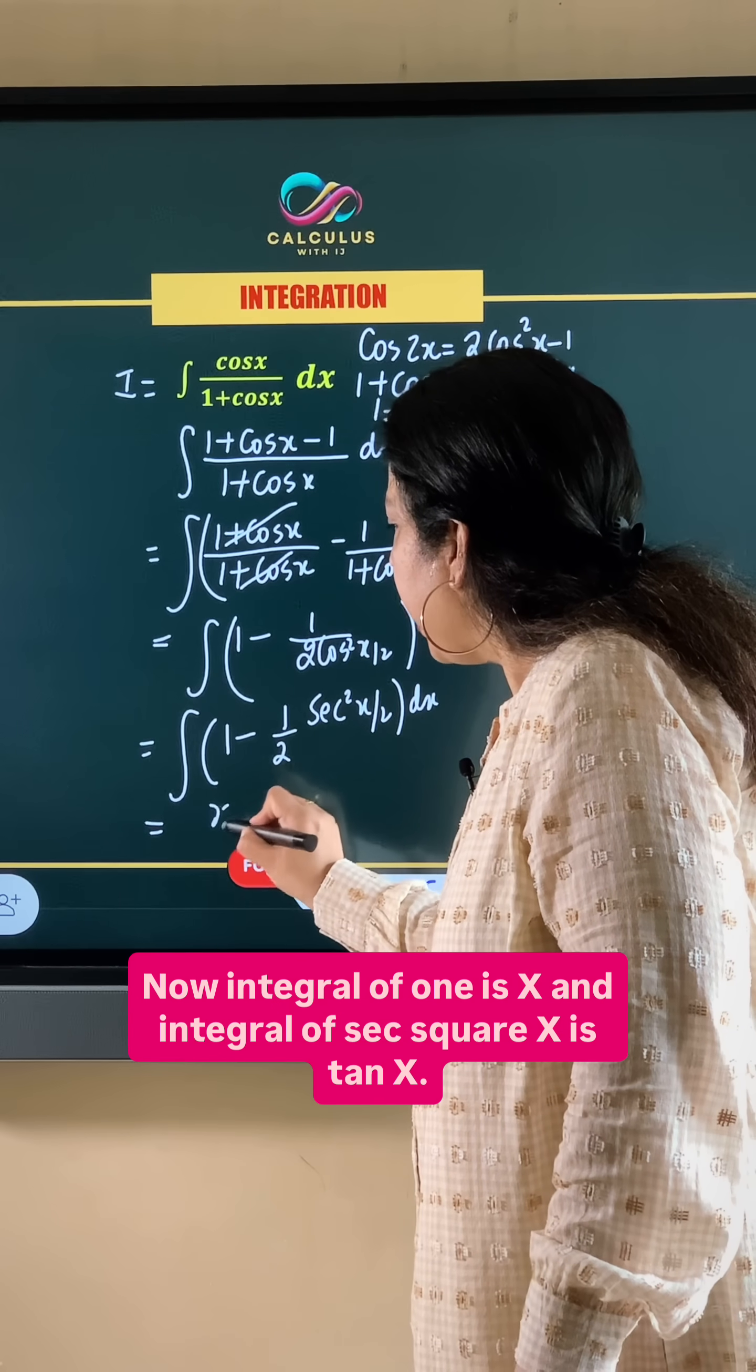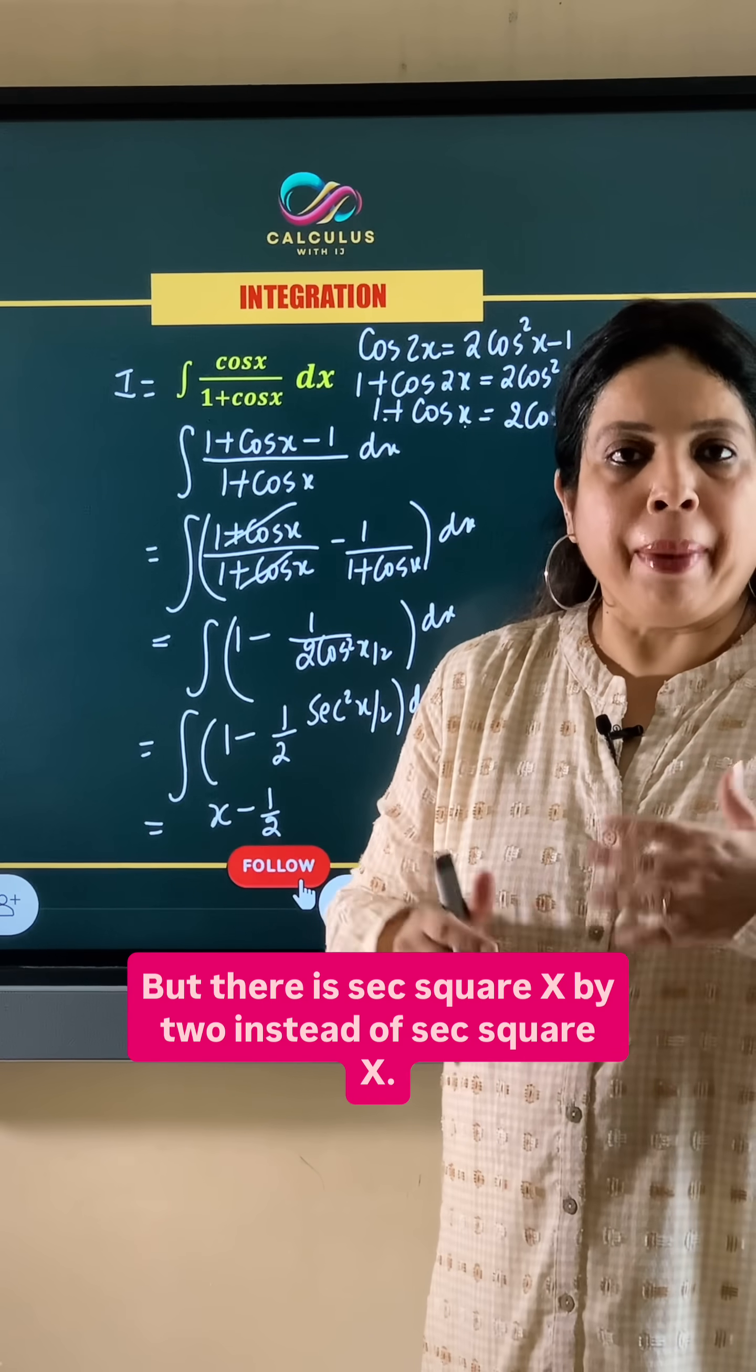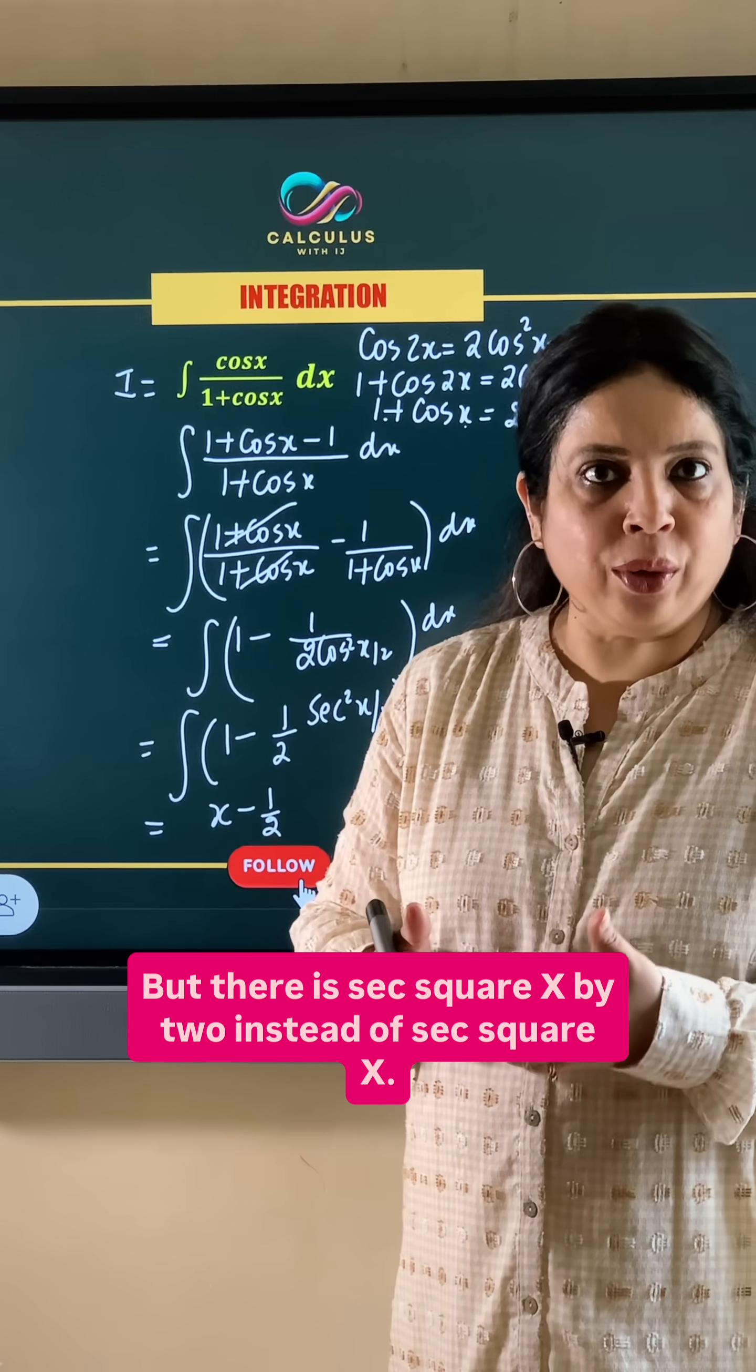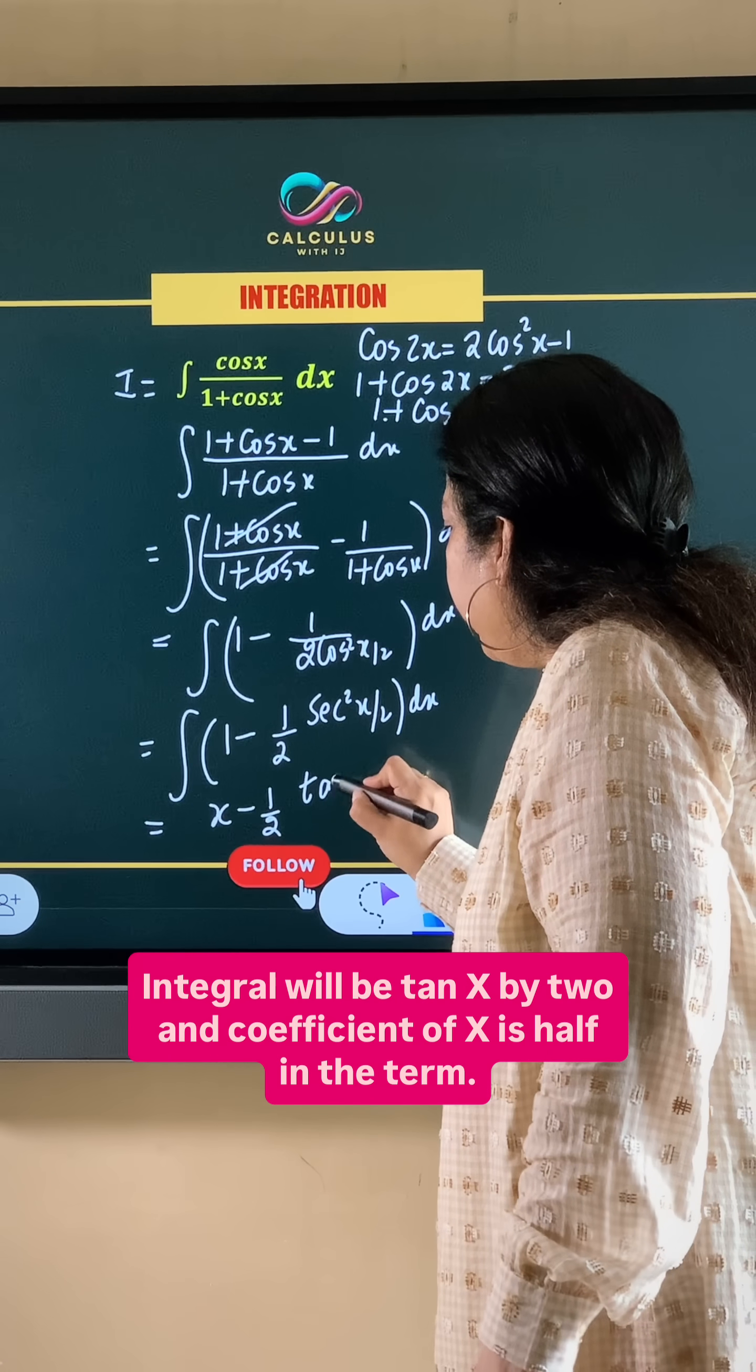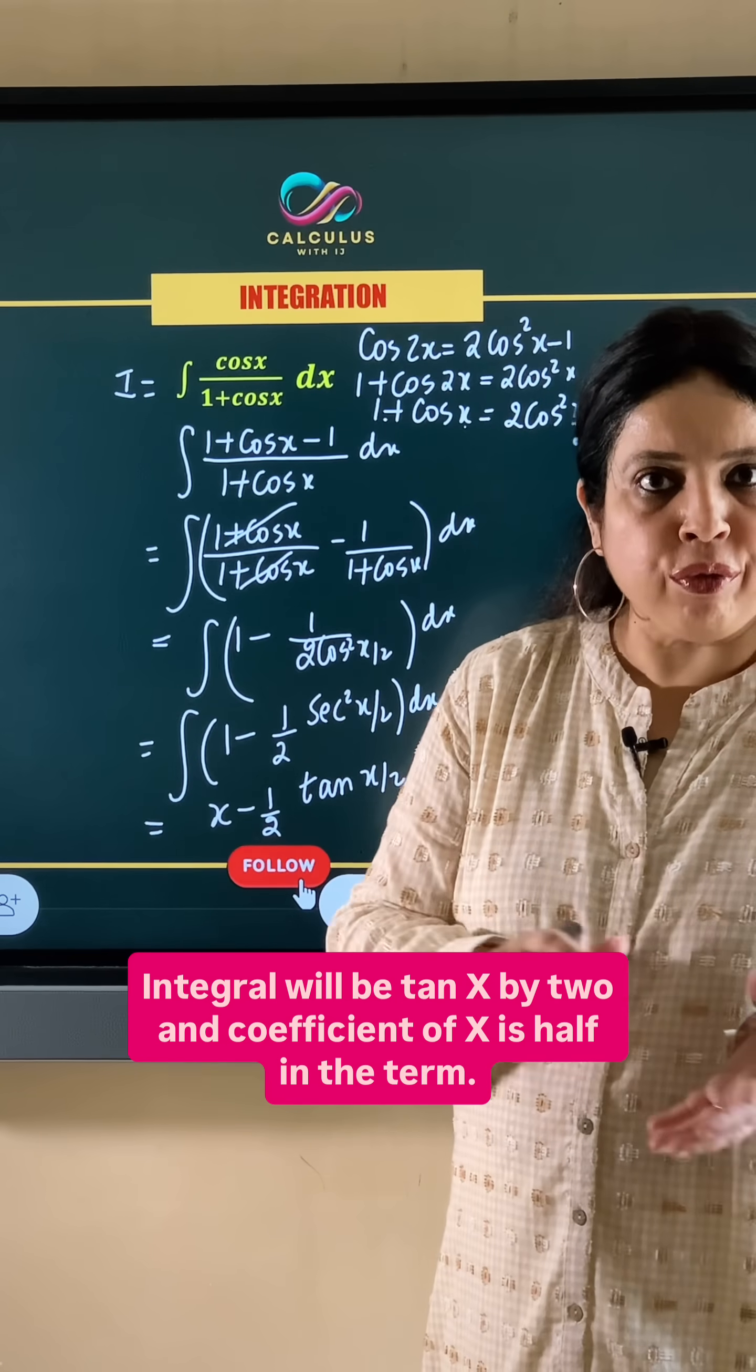Now integral of 1 is x and integral of sec square x is tan x. But there is sec square x by 2 instead of sec square x. So the integral will be tan x by 2 and the coefficient of x is half in the term.